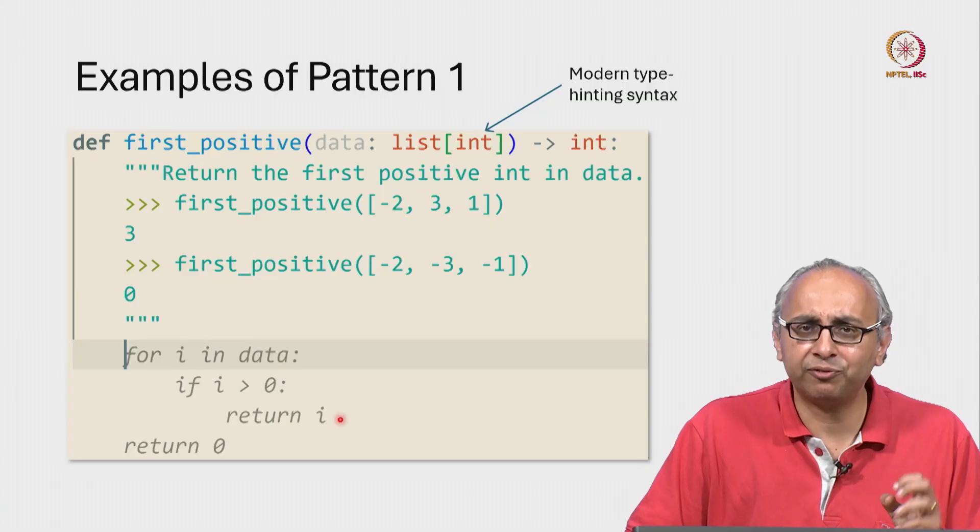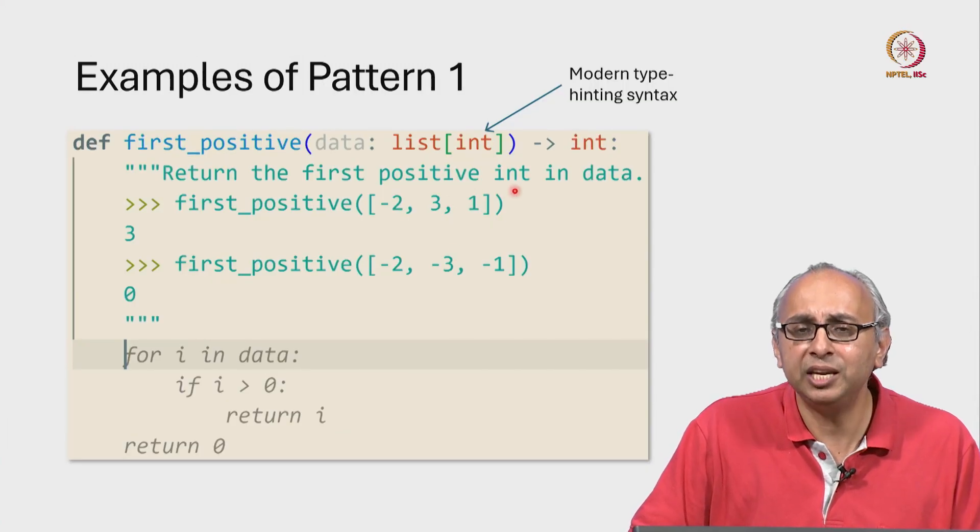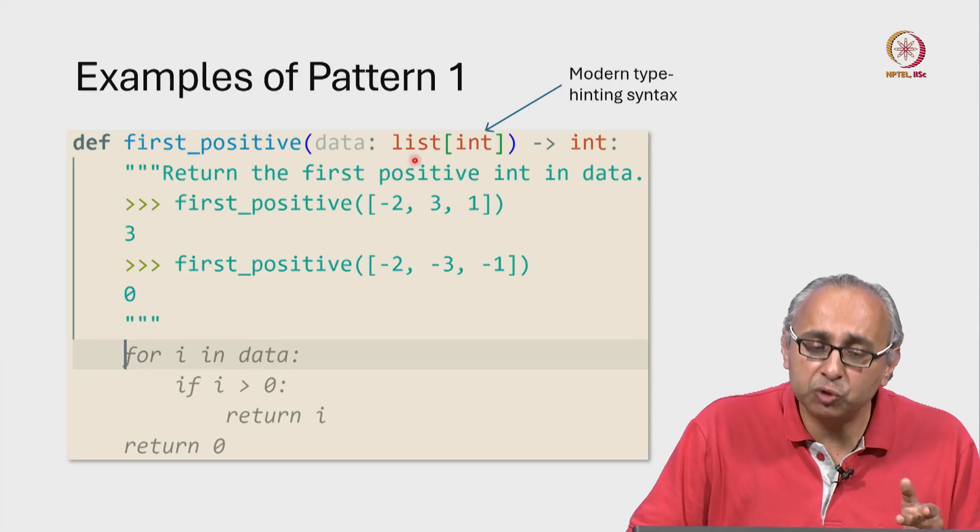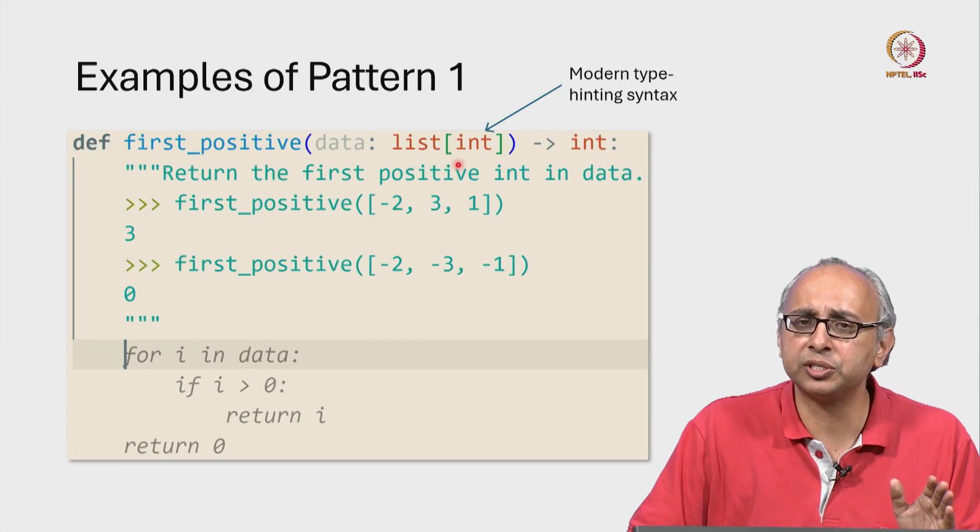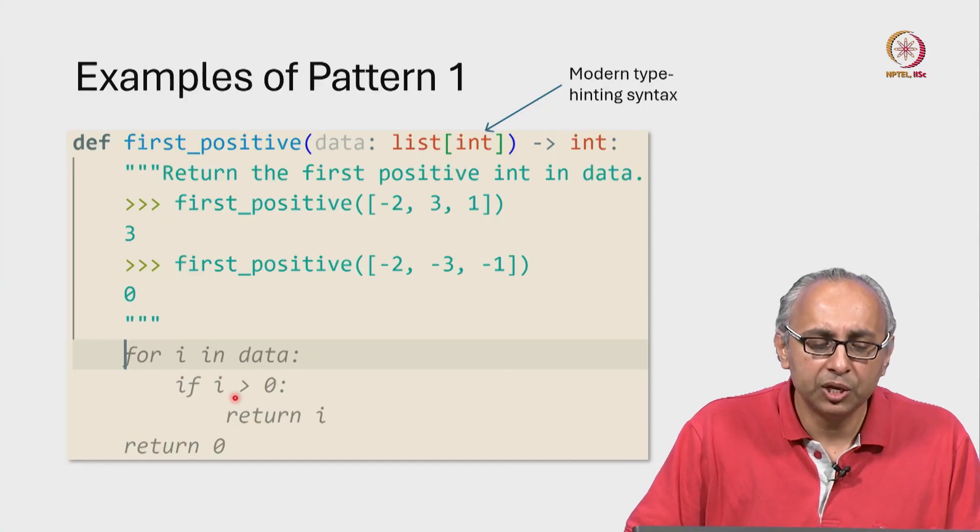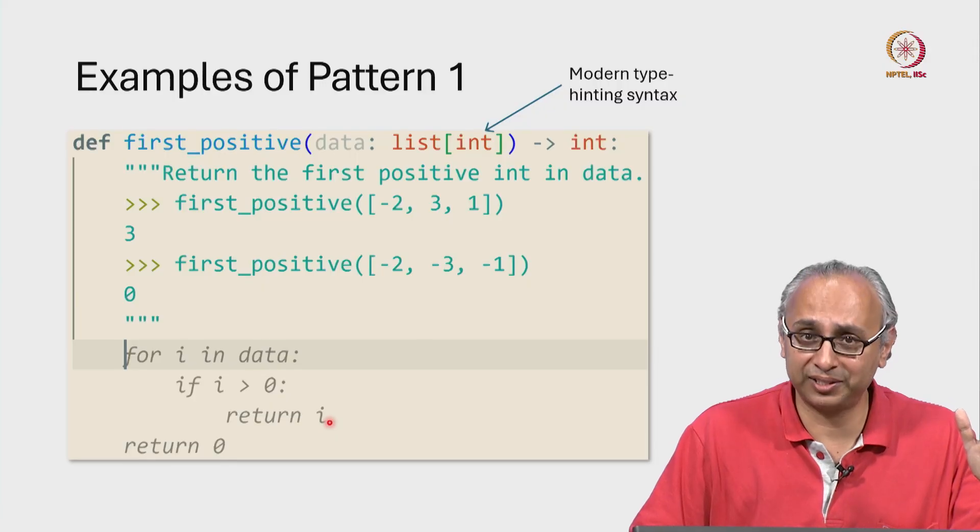Remember, we're not checking if this i really is an integer. We're supposed to find the first positive integer in data, but that's okay because we are assuming that the list that's going to be given to us has only integers in it. So, if that i is positive, we immediately return that i. We immediately succeed.